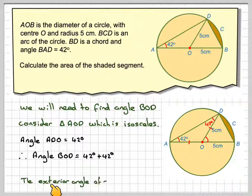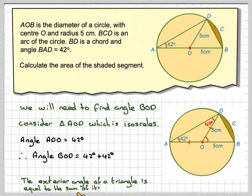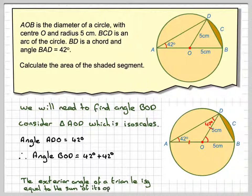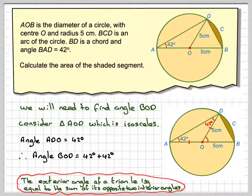The reason being the exterior angle of a triangle is equal to the sum of its opposite two interior angles.